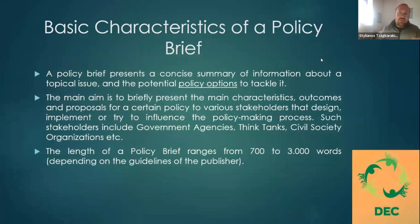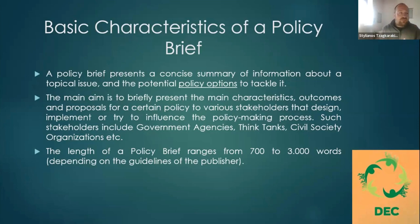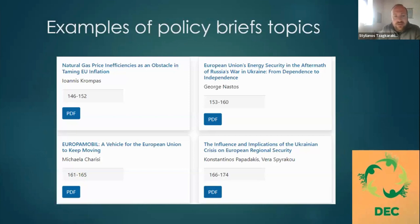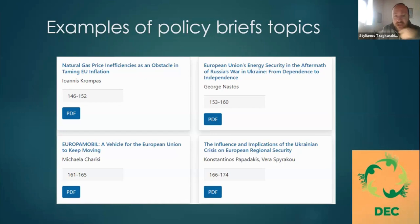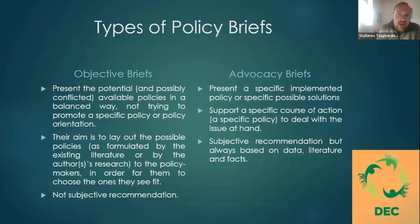In a policy brief you should present the main outcomes, proposals, and recommendations of a specific policy. This could be used by policy makers or scientists for specific topics. For example, from the HAPS policy briefs, some topics include gas price inefficiencies, EU inflation, the war and EU energy policy, and issues connected with education. There are two types of policy briefs: the objective and the advocacy.